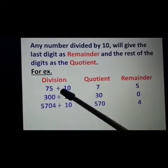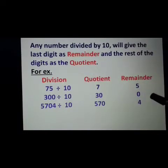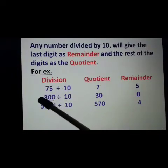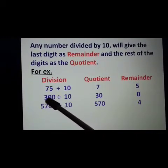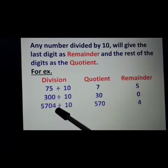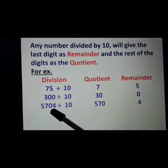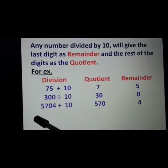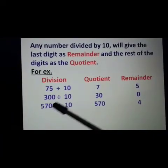If we divide 300 by 10, the last digit is 0, so 0 will be the remainder and the rest of the digits, 30, will be the quotient. Now, here 5704 divided by 10: 4 will be the remainder and the rest of the digits, 570, will be the quotient.